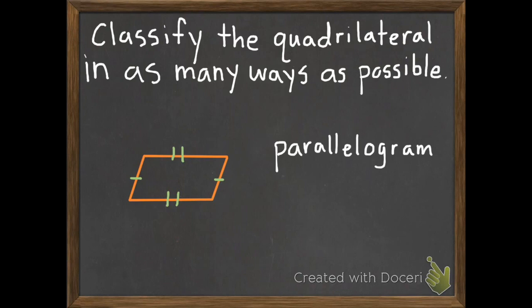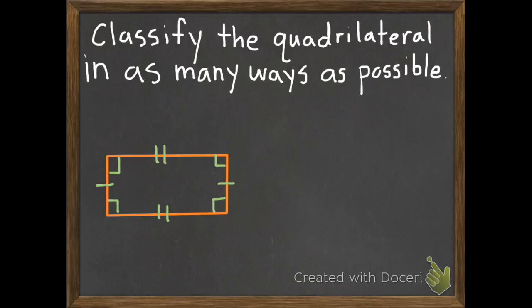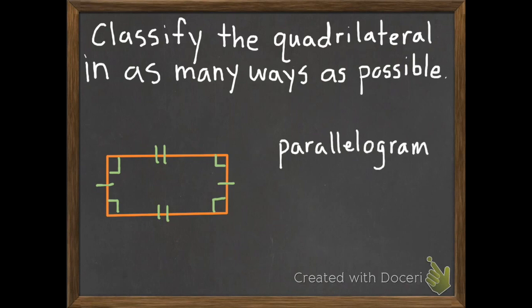I'm going to have you try one with me. Can this be a parallelogram? Can it be a rectangle? Can it be a rhombus? Can it be a square? Can it be a trapezoid? You need to decide — pause it if you need to, then unpause it to see which kinds of quadrilaterals it can be. Okay, so this can be a parallelogram. This can be a rectangle. And that is it.